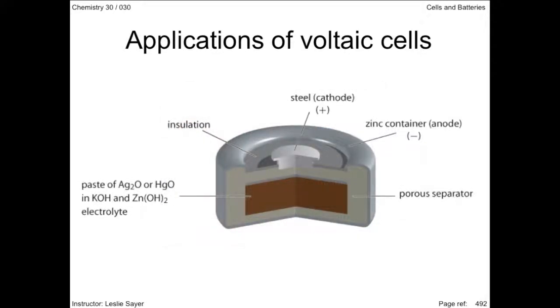Button cells are much smaller than alkaline cells, used in watches, hearing aids, and pacemakers. They still generate a similar amount of electrical potential energy. The zinc metal in hydroxide still makes an effective anode, but here the cathode is either silver ions or mercury ions.